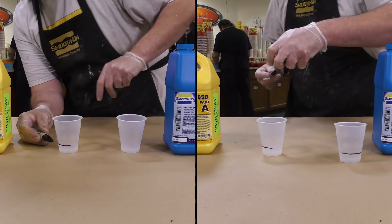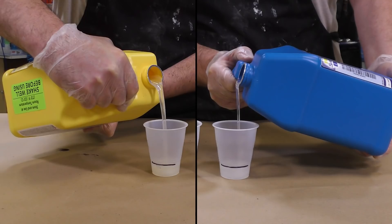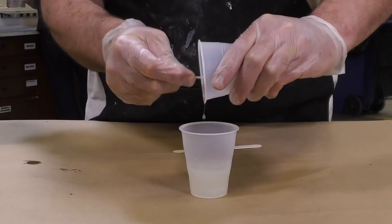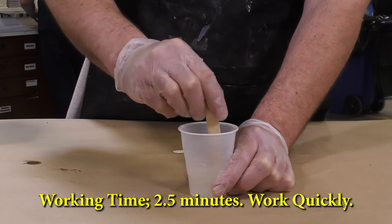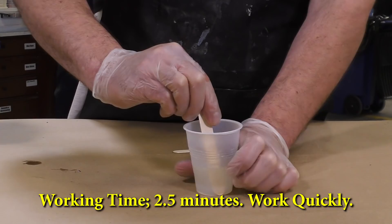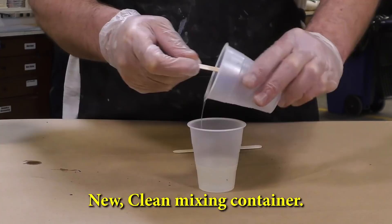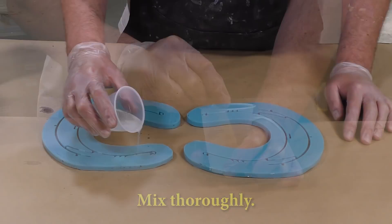My dispensing cups are marked at the same level and we can go ahead and dispense the part A and part B. The two parts are combined in a clean mixing container and then mix thoroughly. Even though I am using a small container and not a lot of material, I'm going to double mix, even more so because I'm mixing a smaller quantity. I want to ensure that the two components are thoroughly mixed together.